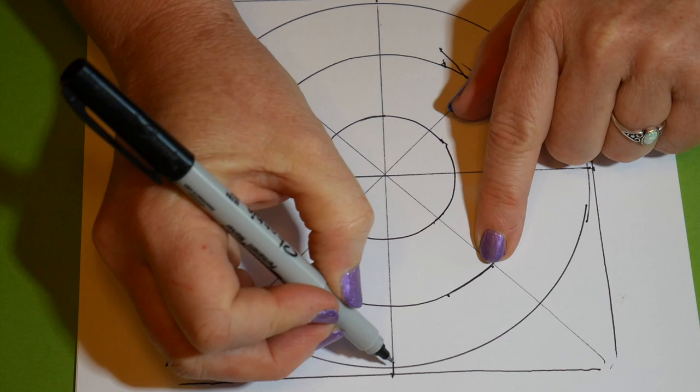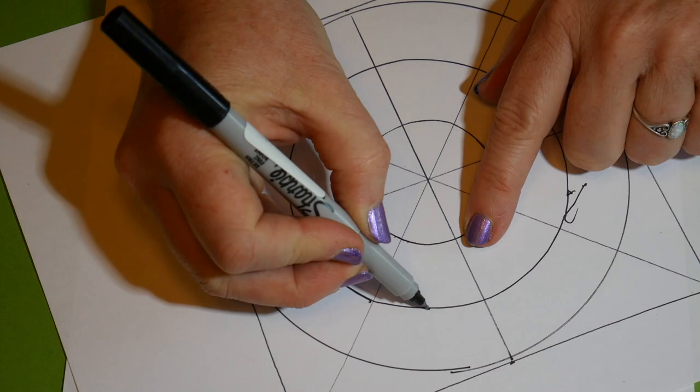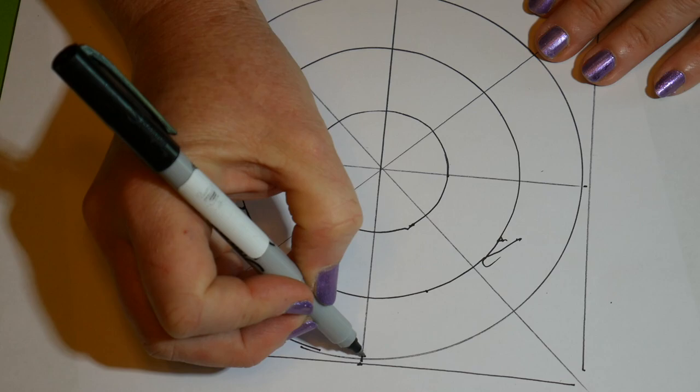So I'm going to find the middle of the second line and then draw a curved line down to it from the outside rim, and just do that all the way around on each radius.